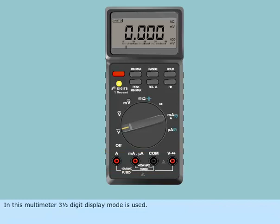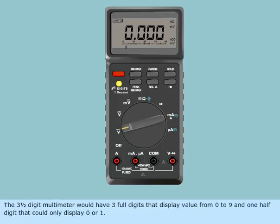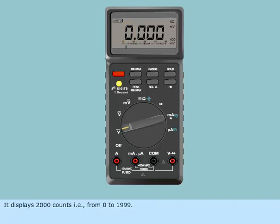In this multimeter three and a half digit display mode is used. The three and a half digit multimeter would have three full digits that display value from 0 to 9 and one half digit that could only display 0 or 1. It displays 2000 counts that is from 0 to 1999.